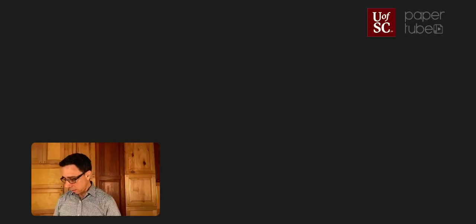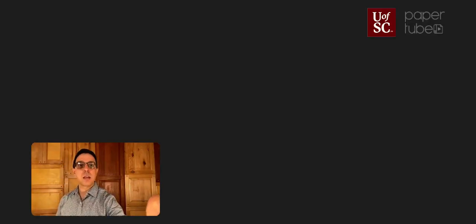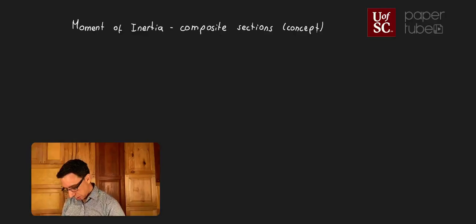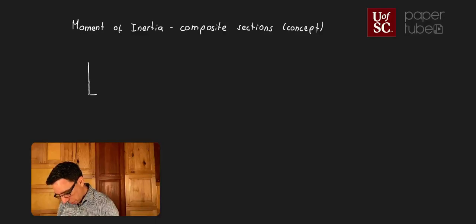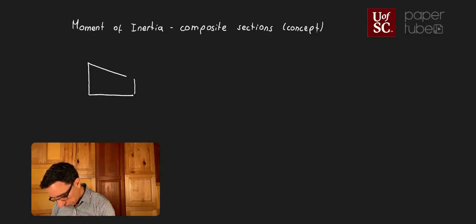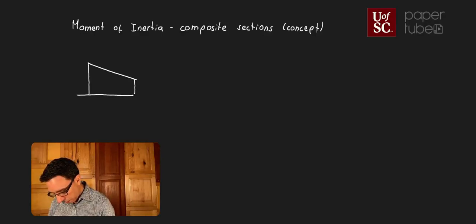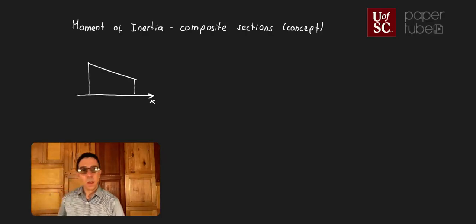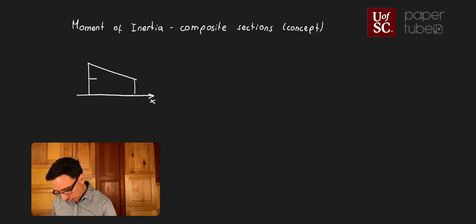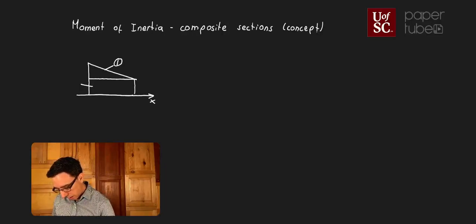For example, let's say that we have a cross section built of something like this. We are interested in analyzing the moment of inertia about this axis x. We can break this section into two different smaller shapes — a triangle and a rectangle.